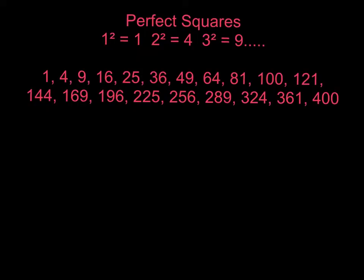So before we get started, just a quick reminder. We will be working with perfect squares, so here is a list of a bunch of the perfect squares. These numbers you should be very familiar with — most of them should be memorized. 1 squared is 1, 2 squared is 4, 5 squared is 25, 9 squared is 81, and so on.